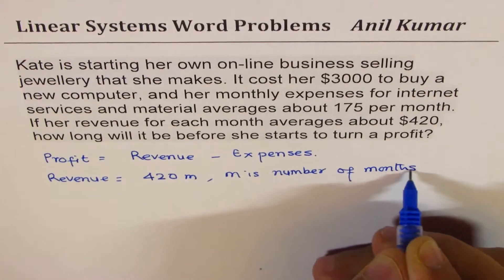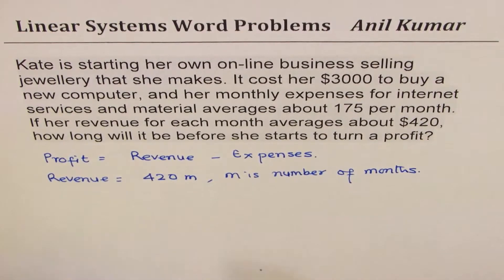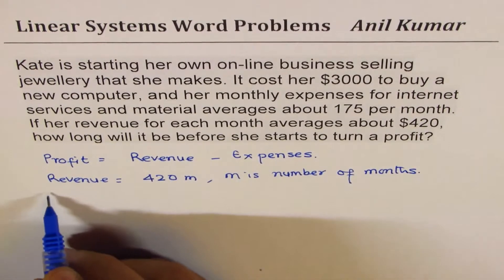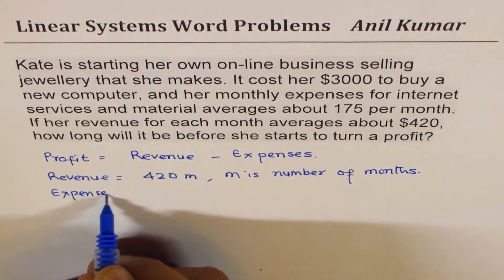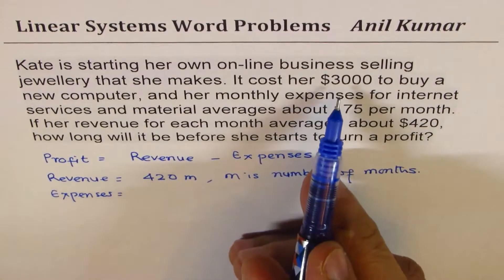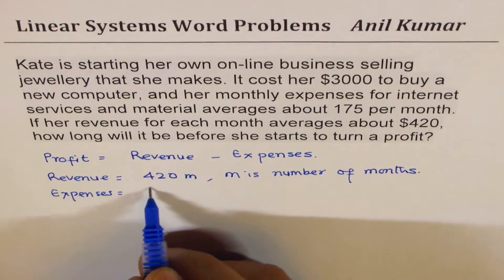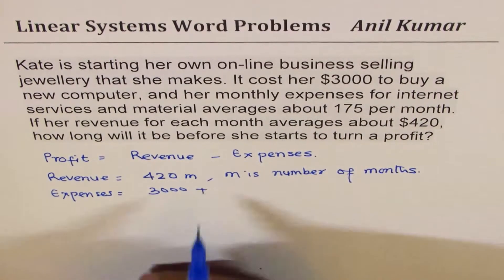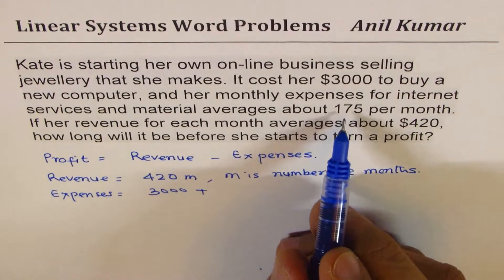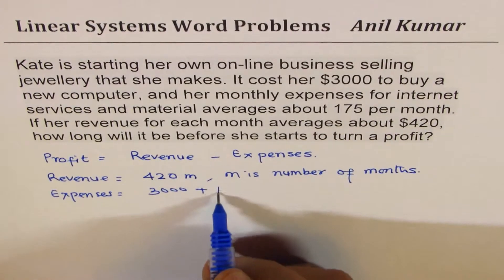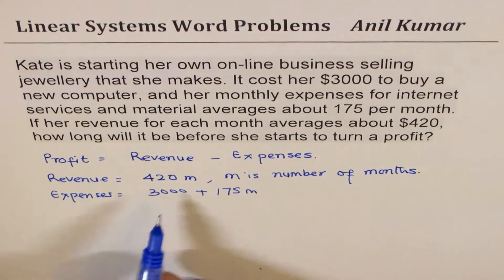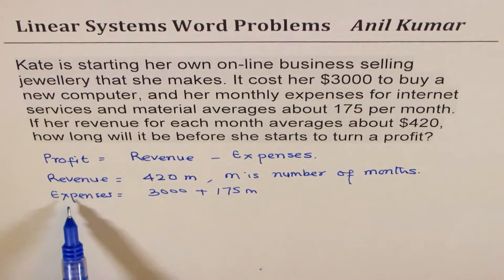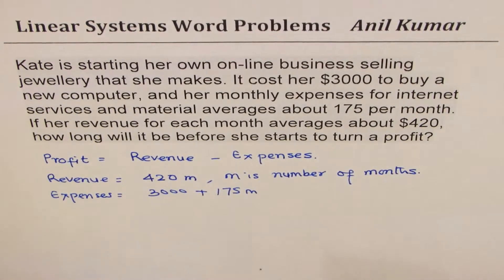So in a way, we have defined a variable. Now, what are the expenses? Expenses are $3,000 as a fixed expense, plus $175 per month, which is $175 times M. So that is how you get two equations — revenue and expense give us two equations.